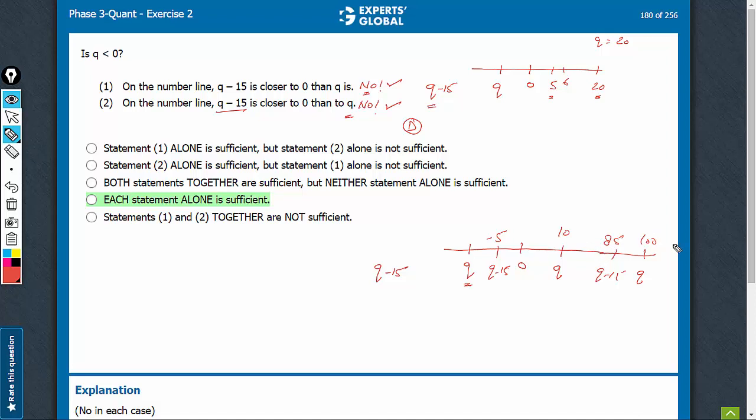But again, you don't have to do this. It's all just for your conceptual clarity. The point is that for statement 1 also, negative values are not possible to satisfy the condition. For statement 2 also, negative values are not possible for satisfying the given condition, and therefore, in each case, we get no as the answer.